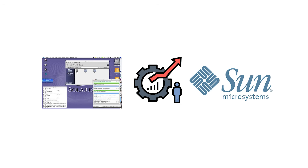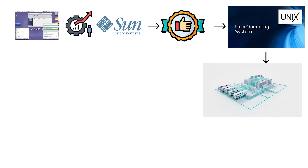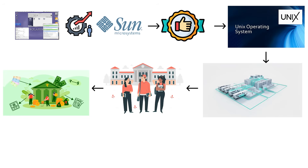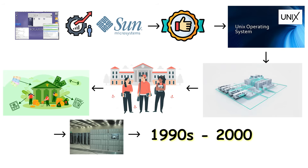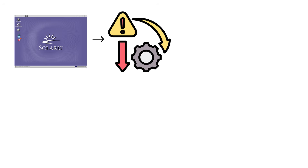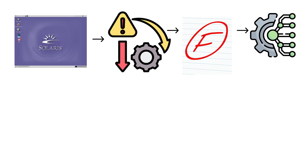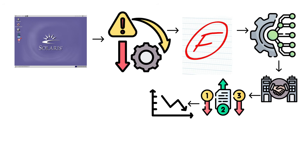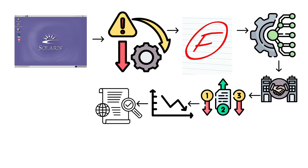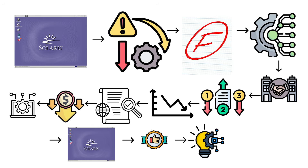Solaris, originally developed by Sun Microsystems, was one of the most respected Unix operating systems in the enterprise world. It powered data centers, universities, financial institutions, and high-end servers throughout the 1990s and early 2000s. Unlike most systems on this list, Solaris did not fail because of technical shortcomings. It failed because of what often kills good technology: corporate acquisition, shifting priorities, and a gradual decline in relevance as the world standardized around cheaper, simpler platforms. Solaris introduced several advanced technologies long before they became industry standards.